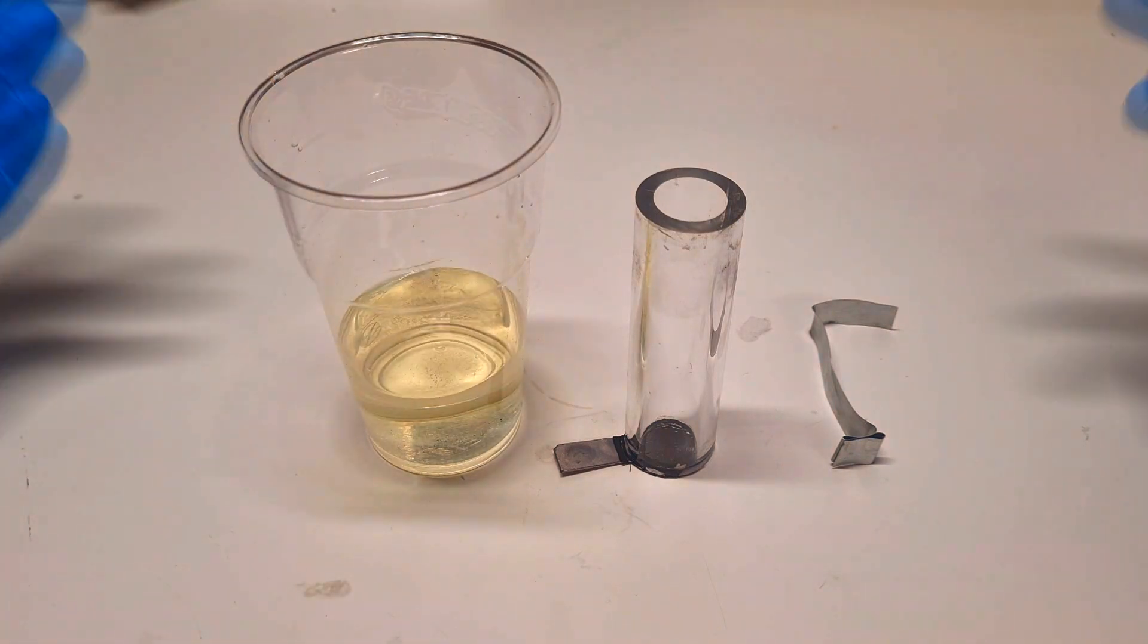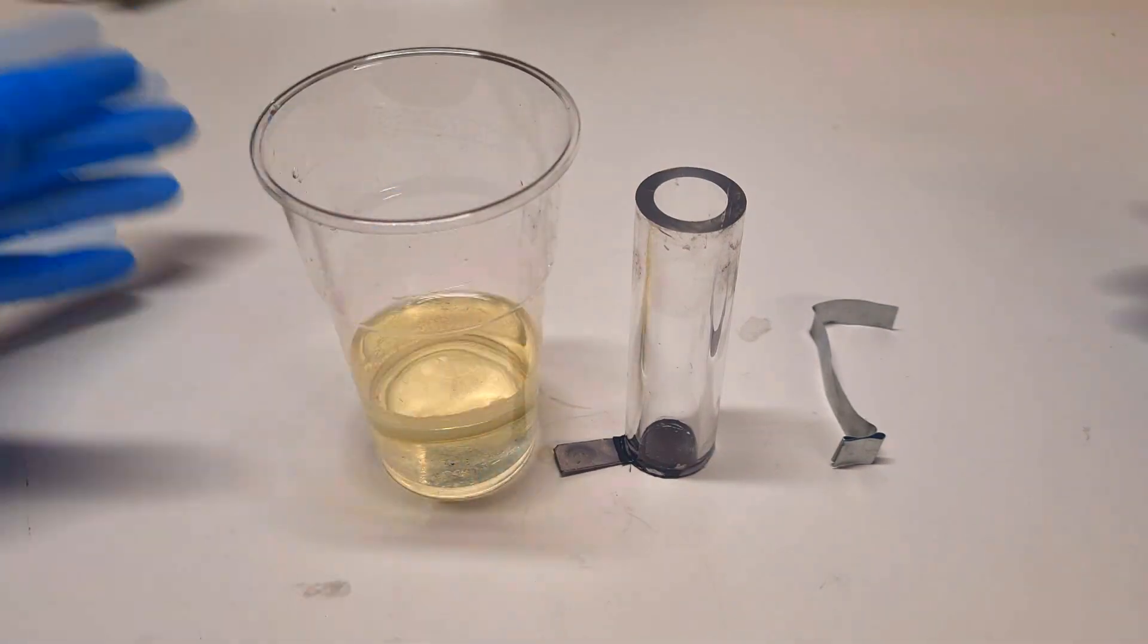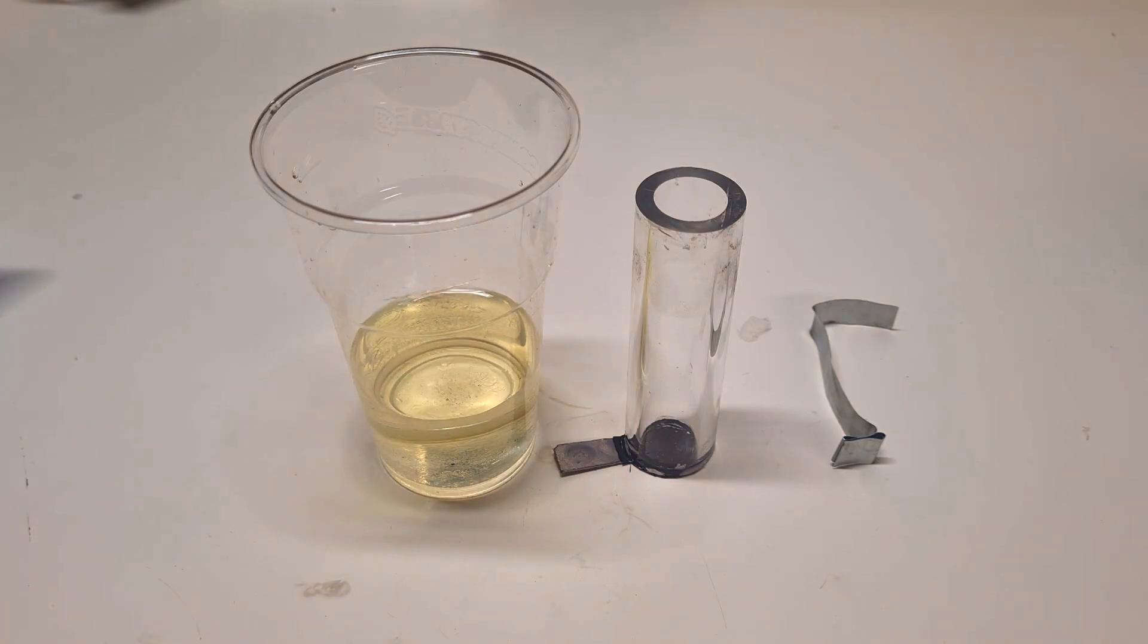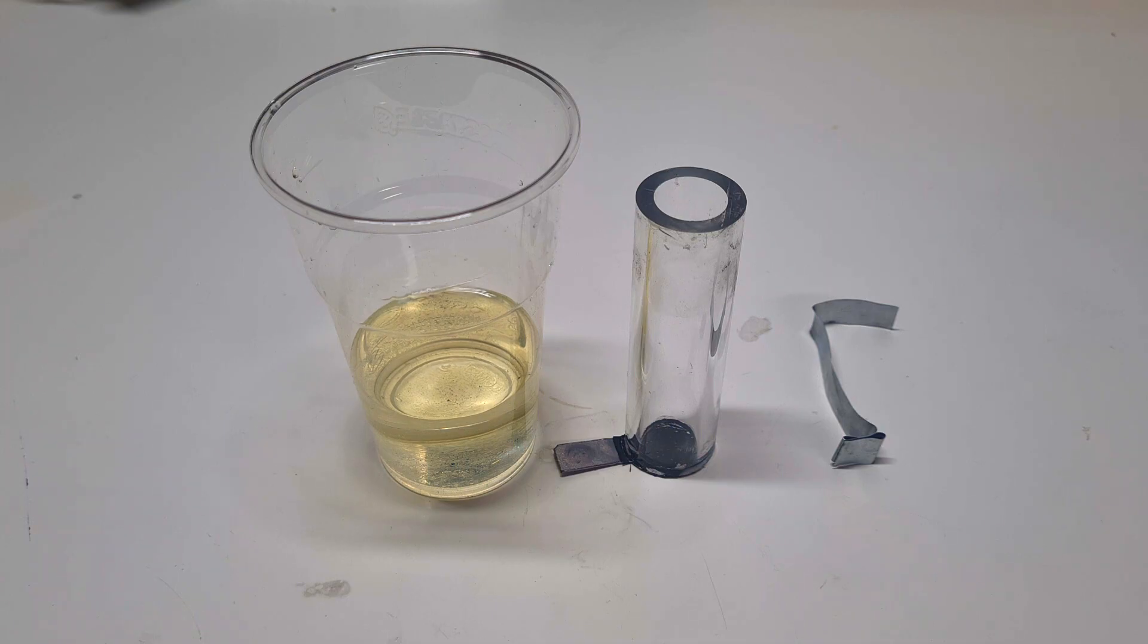Actually to make this zinc-iodine electrolyte you have three options. The first option will be if you can buy some zinc iodide powder and then mix this zinc iodide powder with water and the electrolyte will be ready. But for most people finding zinc iodide powder will be a little bit hard, and if you have some luck and find it, then the prices can be really high if you buy in small quantities.